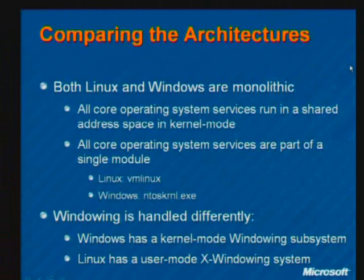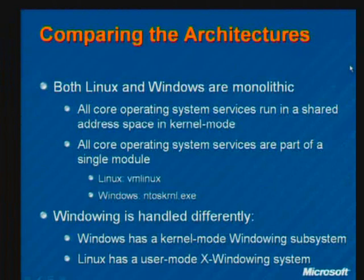At the highest level when you compare the two operating systems, the only real difference you see is windowing. Windows has a kernel-mode windowing subsystem, and Linux has a user-mode X windowing system.